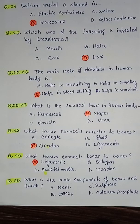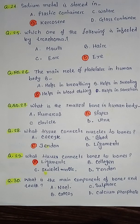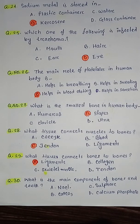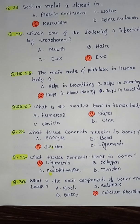Question number thirty: what is the main component of bones and teeth — option A sodium chloride, option B calcium bicarbonate, option C sulfur, option D calcium phosphate. So the correct answer is option D calcium phosphate.